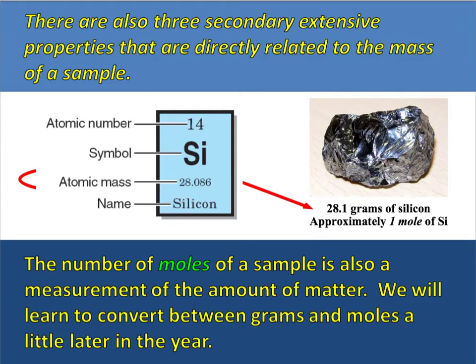So what we just went over were the three primary extensive properties: mass, volume, and length. What we are about to go over are what we call secondary extensive properties. I want you to learn these, but it'll make more sense later on in the year when we actually do more work with some of these topics. The first kind of secondary extensive property is the number of moles in a sample. This is related to the amount of matter, so it's related to size — that's why it is an extensive property.